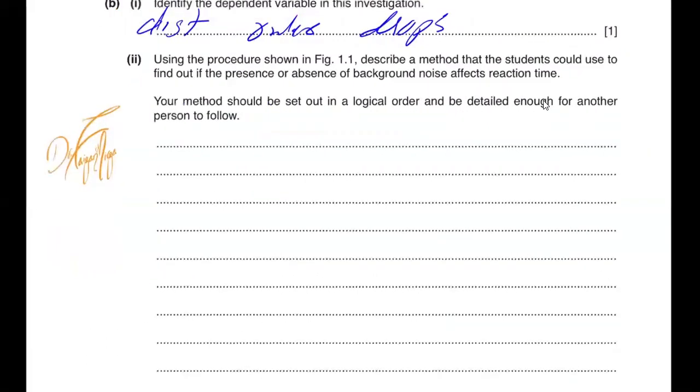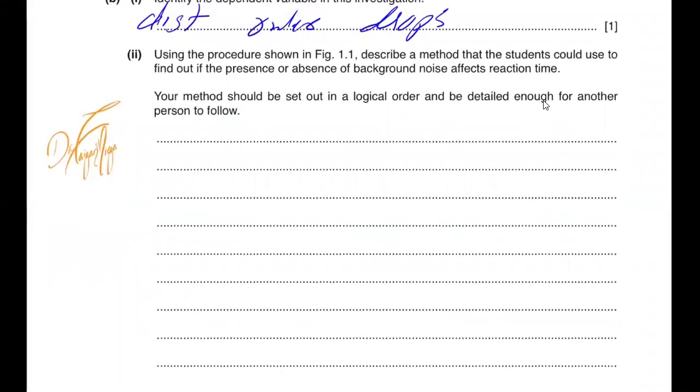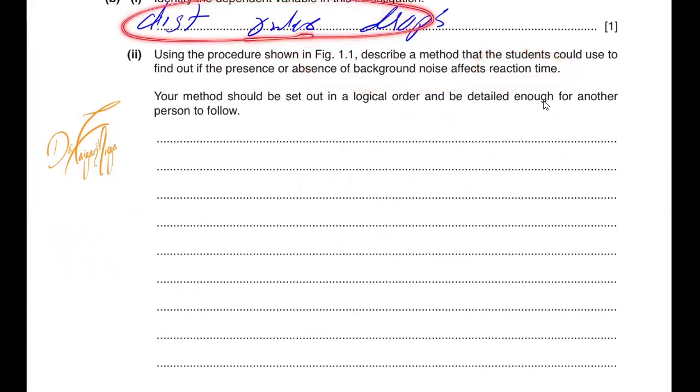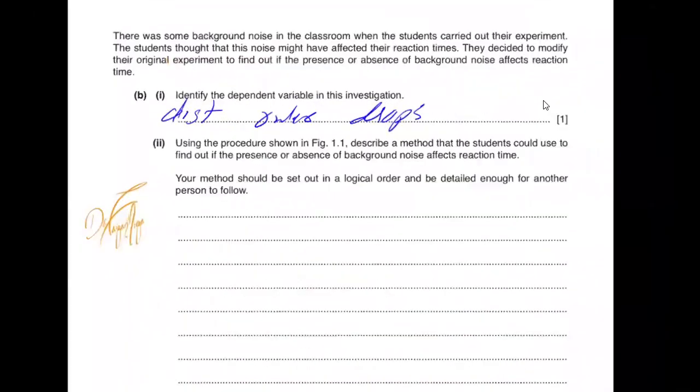Using the procedure shown in figure 1.1, describe the method the students could use to find out if the presence or absence of the background noise which is your independent variable affects the reaction time which is the dependent variable indirectly calculated by using the distance the ruler drops. Your method should be set in logical order and detail enough. So again you will mention the variable, you will mention your procedure, you will mention the safety and you will mention the reliability.